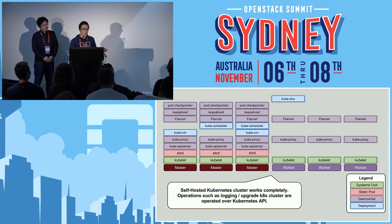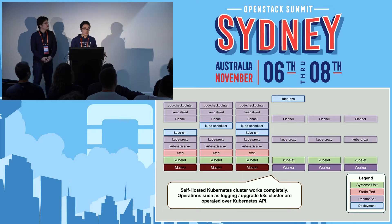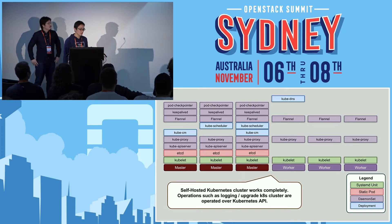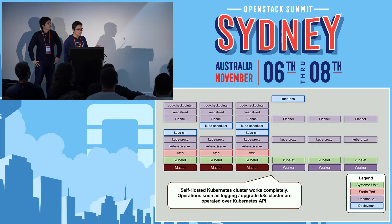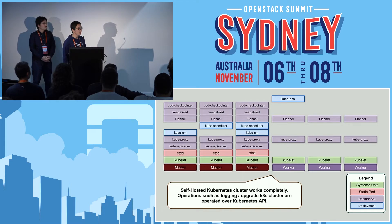If the complete Kubernetes cluster is working, we need no more other tools to manage Kubernetes. We can upgrade the Kubernetes cluster using the Kubernetes API with Deployments. We can collect Kubernetes component logs through the Kubernetes API. And we can replace Kubernetes nodes using the Kubernetes API.